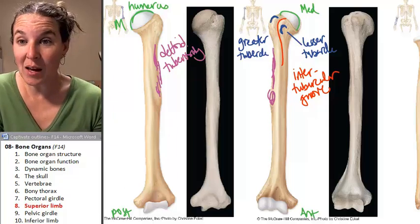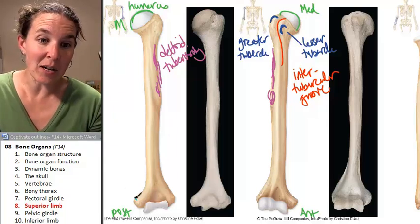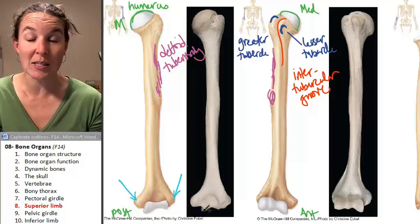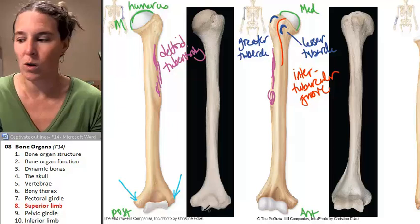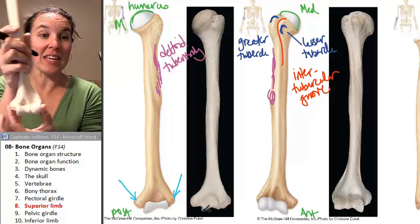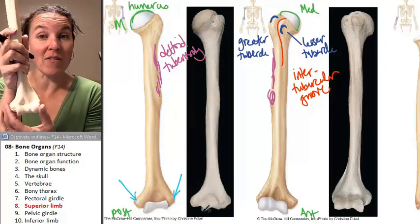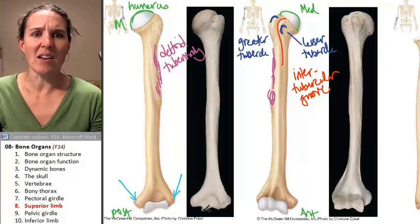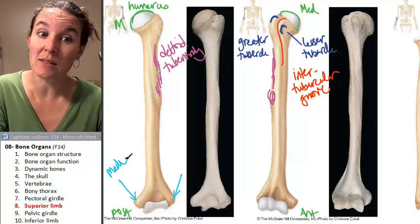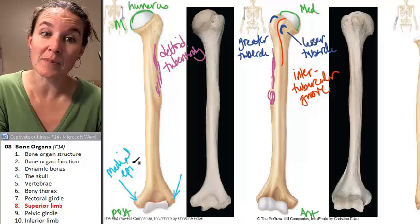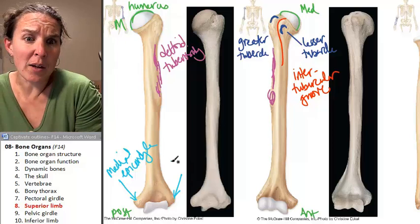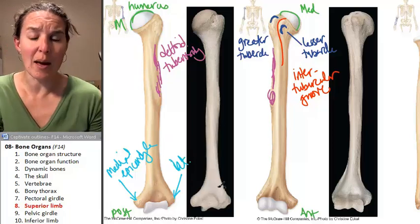We have a medial epicondyle and a lateral epicondyle. As long as you know which side of the humerus is medial and which side is lateral, you're good. The medial and lateral epicondyles are the bumps on the distal end of the humerus — match up the head of the humerus with the medial epicondyle, and the other side with the lateral epicondyle.